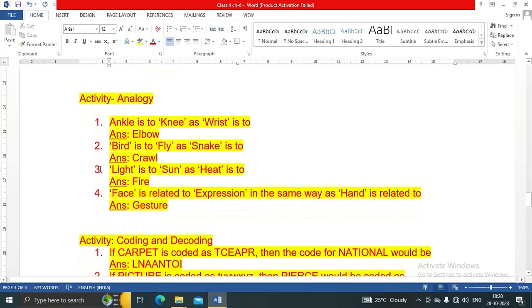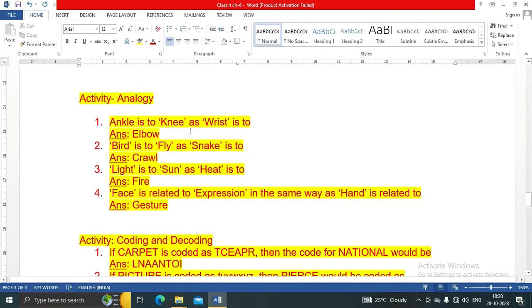Let's see Activity Analogy. Ankle is to knee as wrist is to elbow. Answer is elbow. Bird is to fly as snake is to crawl. Bird will fly and snake will crawl. Light is to sun as heat is to fire.